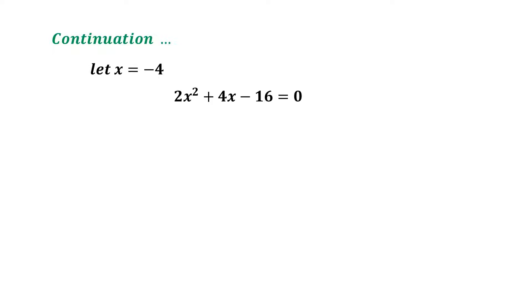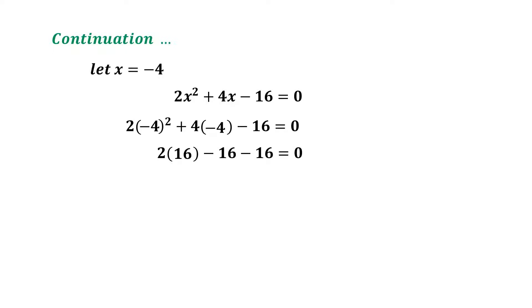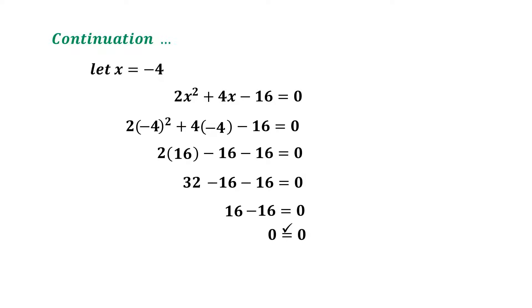Let us also check x = -4. Using the original equation 2x² + 4x - 16 = 0, substitute x = -4: 2(16) + 4(-4) - 16 = 0; 32 - 16 - 16 = 0; 16 - 16 = 0; 0 = 0. Therefore, -4 is a solution of 2x² + 4x - 16 = 0.